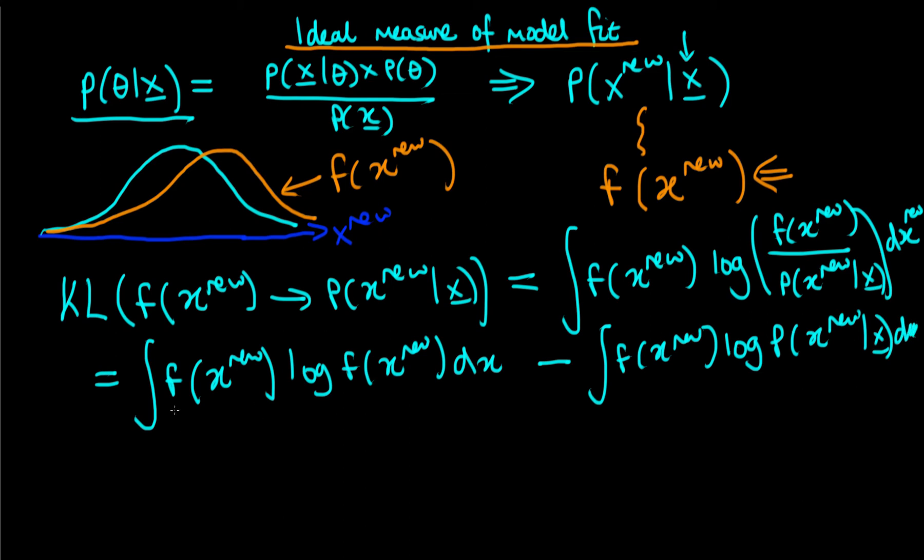Then what we do is we consider both of these terms and we see that the first term here essentially is just a constant because it only depends on F of X new. And so that doesn't tell us anything about how well our model fits the data. Whereas this second term contains F, this unknown true data generating process, and also a term which depends on our model that we fit.